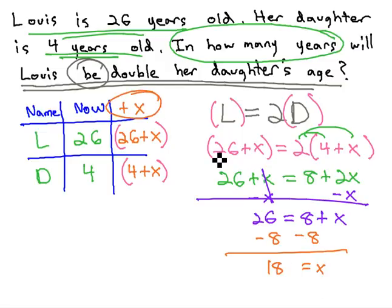X is that unknown amount of time we are adding. In 18 years, Lois will be double her daughter's age. In 18 years, the daughter will be 22, and Lois will be 44.